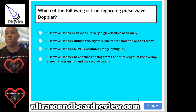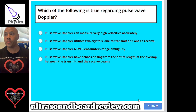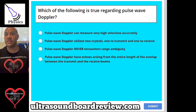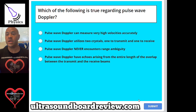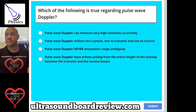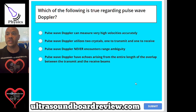Question 63: Which of the following is true regarding pulse wave Doppler? A, pulse wave Doppler can measure very high velocities accurately; B, pulse wave Doppler utilizes two crystals, one to transmit and one to receive; C, pulse wave Doppler never encounters range ambiguity; or D, pulse wave Doppler has echoes arising from the entire length of the overlap between the transmit and receive beams. The answer is C, pulse wave Doppler never encounters range ambiguity.